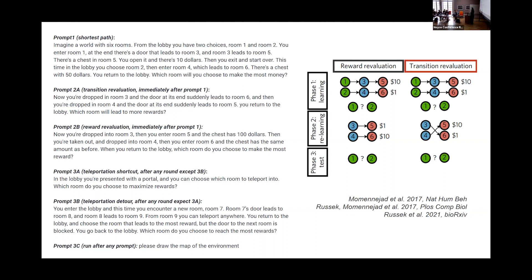Prompt one: imagine a world with six rooms. From the lobby you have two choices, room one or room two. You enter room one — then room three — then room five, where there's a chest with ten dollars. Then back to the lobby, room two — room four — room six, with fifty dollars. Which room will you choose? In transition evaluation, the door to four opens to five and the door to three opens to six — which room do you choose? For reward evaluation, the rewards change. For the shortcut, a teleportation portal appears in the lobby. For the detour, the door to the most rewarding room is shut, so you need a three- to four-step teleportation path.